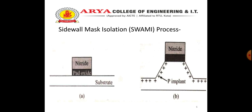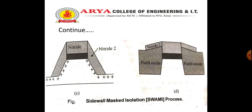Next is the Sidewall Masked Isolation process, also known as the SWAMI process. As shown in the figure, we have a substrate above which there is a pad oxide, on top of which there is a nitride layer. In the next figure, a p-implant is present and the topmost material is nitride. First, a thermal pad oxide is grown and a nitride layer is deposited. The layers are patterned and the silicon is etched to a depth of about half the desired oxide thickness. A second layer of nitride is deposited and anisotropically etched, leaving a sidewall of nitride on the slopes of the silicon, which effectively seals the active regions. A thermal oxidation is then done for the field oxide.